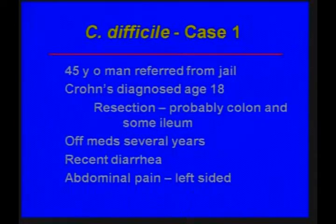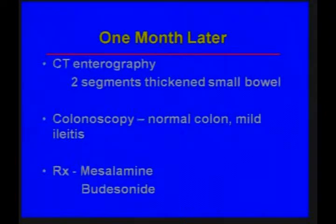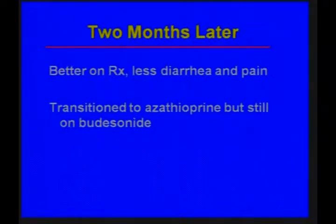I'm going to share two cases. The first is a man referred from our jail. He had Crohn's disease diagnosed when he was a teenager and had had some sort of surgery — probably some colon and small bowel resected. He had been off his medications for many years, but in jail he developed diarrhea and left-sided abdominal pain. A CT enterography showed two areas of thickened small bowel consistent with Crohn's disease, with a normal colon and mild inflammation in his distal ileum. We treated him with mesalamine and budesonide, and he was better.